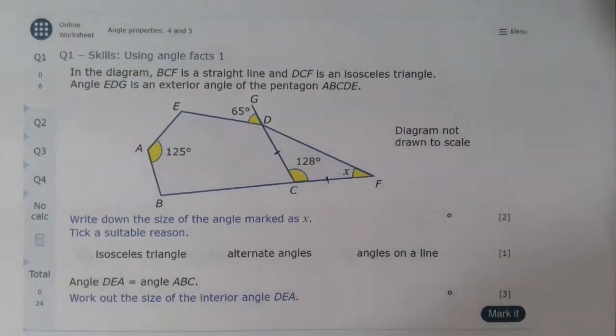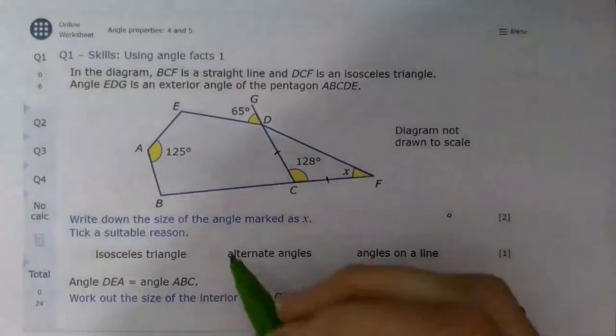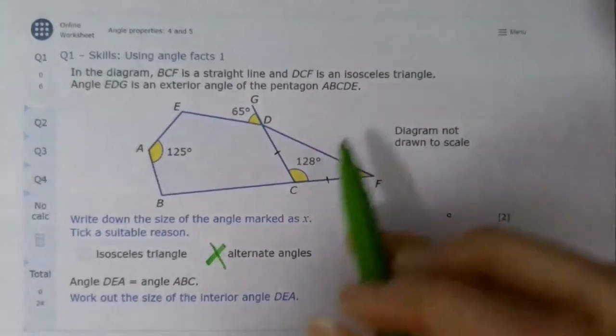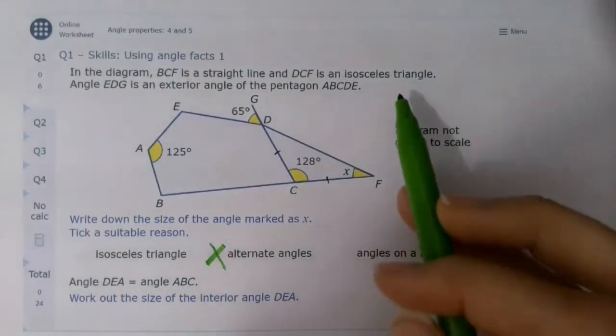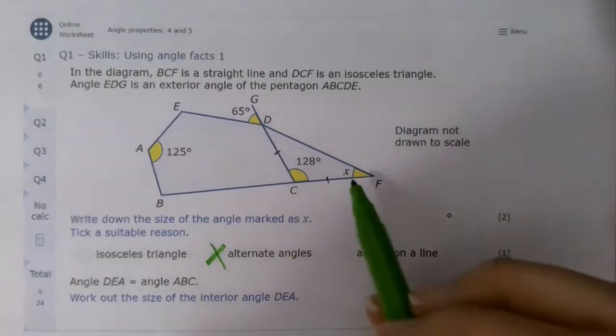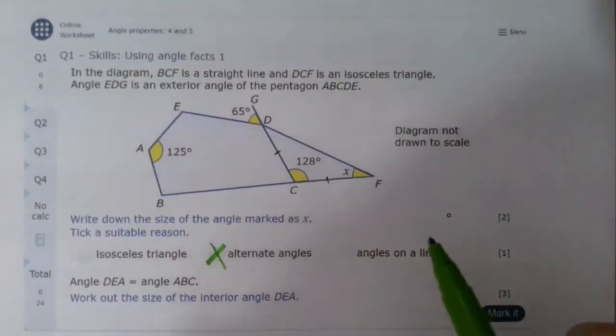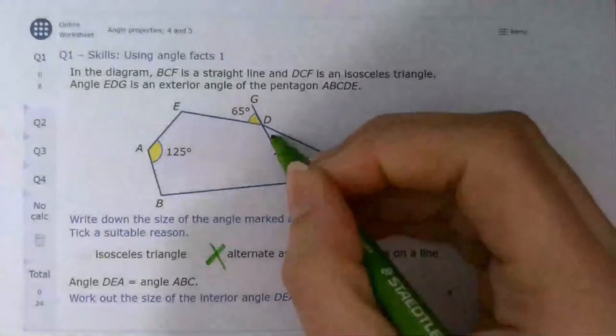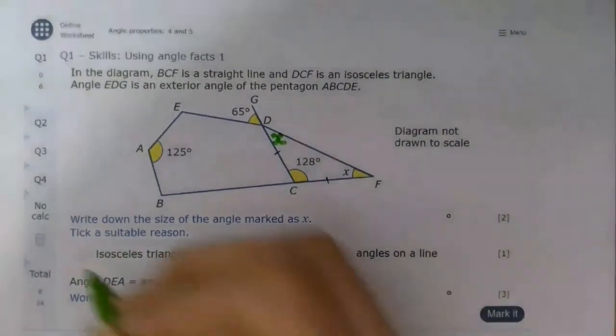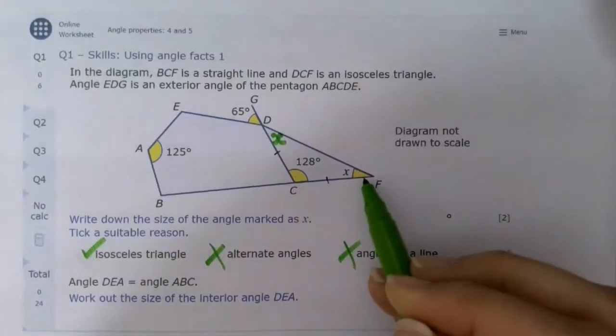First of all, I can't see any parallel lines. There is absolutely no way that this is going to be alternate angles. Remember, we've already been told there's an isosceles triangle in the question. So is x part of the isosceles triangle? Yes it is. In fact, this other angle over here would be x. So that's the reason we're going to be using.